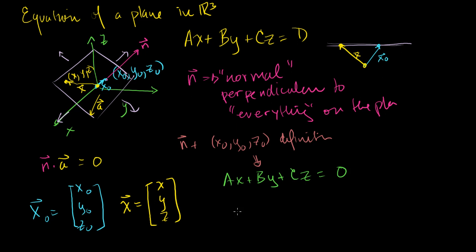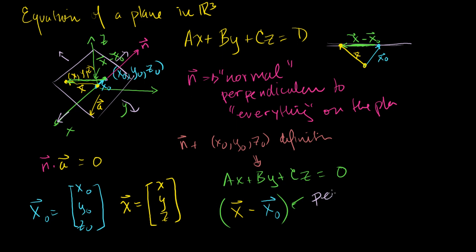Using these vectors, I can construct a vector that does lie in the plane. Consider x minus x-naught. Looking at the little triangle I drew: x minus x-naught will be this green line going from the point specified by x-naught to the point specified by x, lying along the plane. We can verify: x-naught plus (x minus x-naught) equals x. So x minus x-naught lies on the plane, and therefore must be perpendicular to the normal vector n.